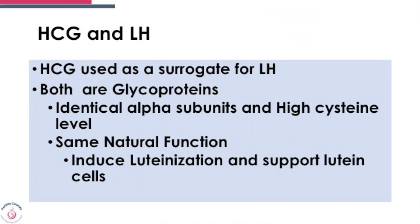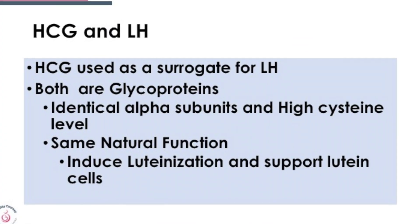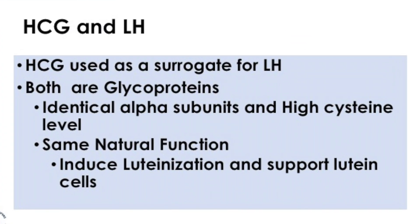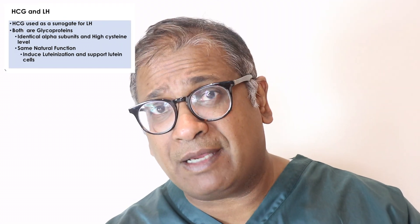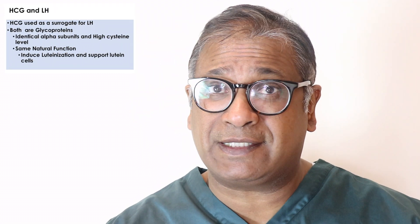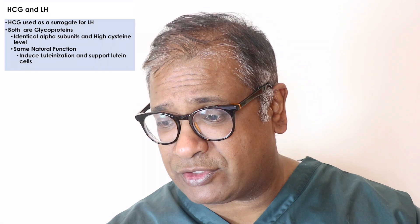For many years, HCG has been used as a surrogate for LH. They're both quite similar — they're both glycoproteins. They have identical alpha subunits and high cysteine levels, and they have the same natural function: they induce luteinization and support the luteal cells.